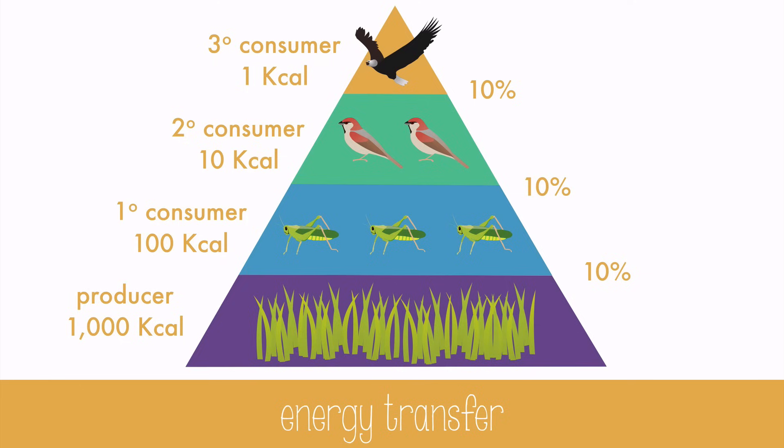This does mean, however, that as you go up the pyramid, there will be fewer and fewer organisms that can be supported by the level below. That's why there are so few eagles compared to sparrows or grasshoppers in any given ecosystem.